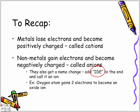So an example. Oxygen atom gains two electrons to become an oxide ion. So it's no longer called oxygen, it is called oxide.